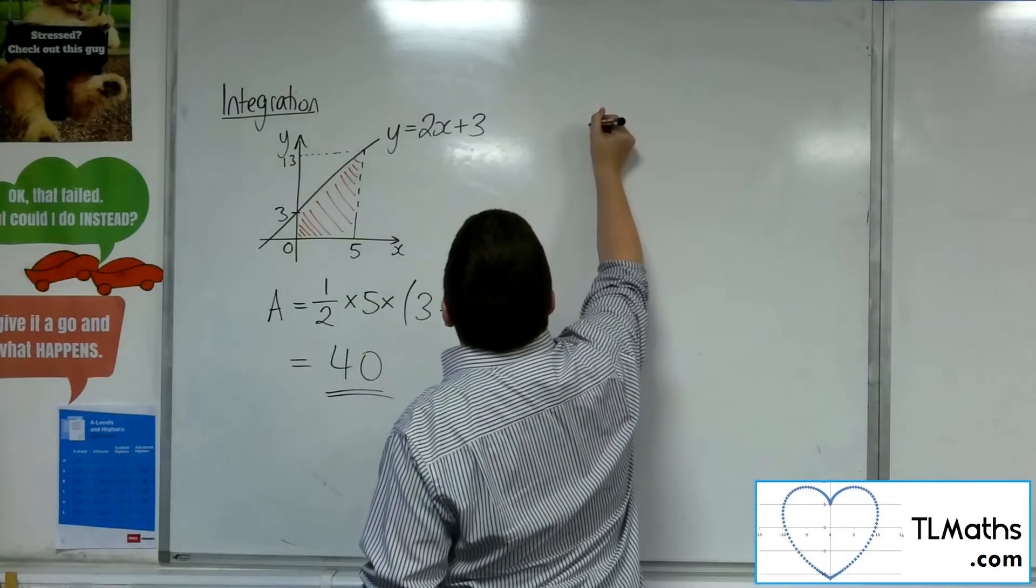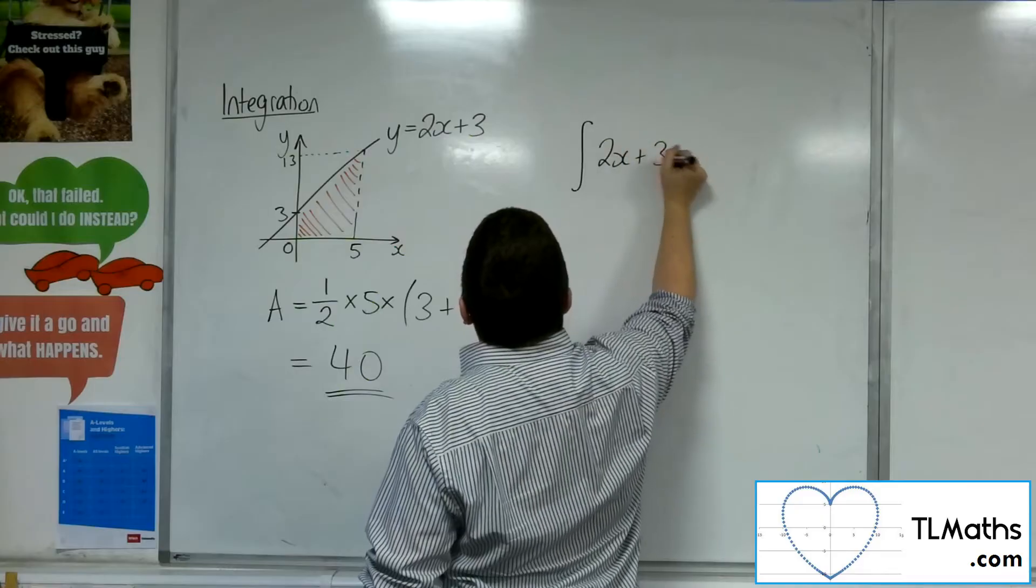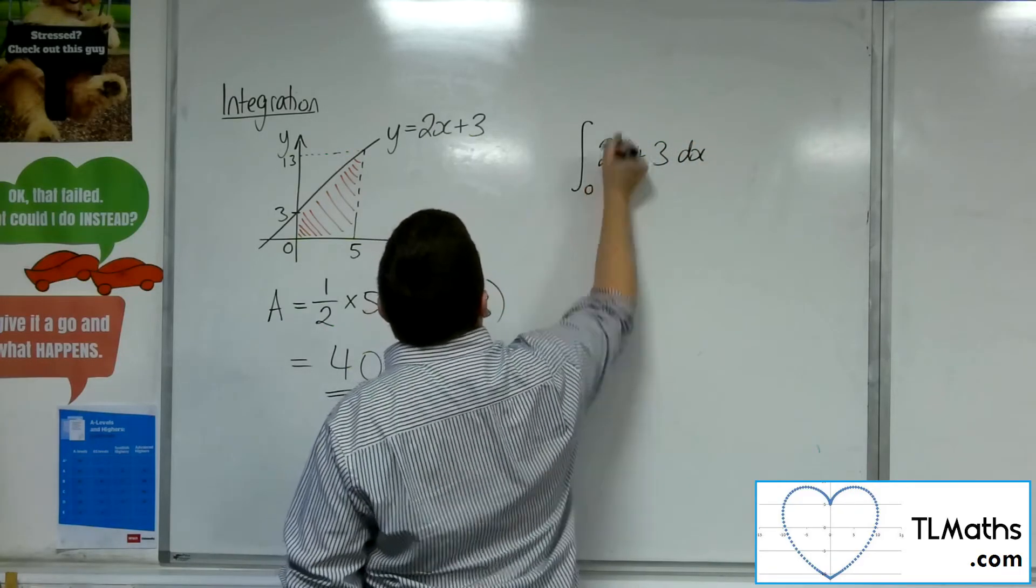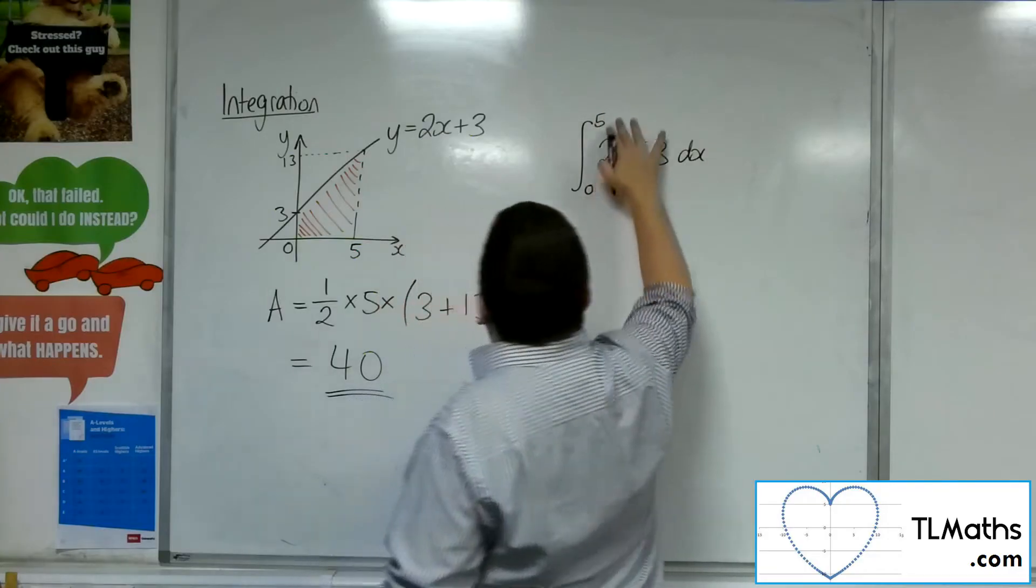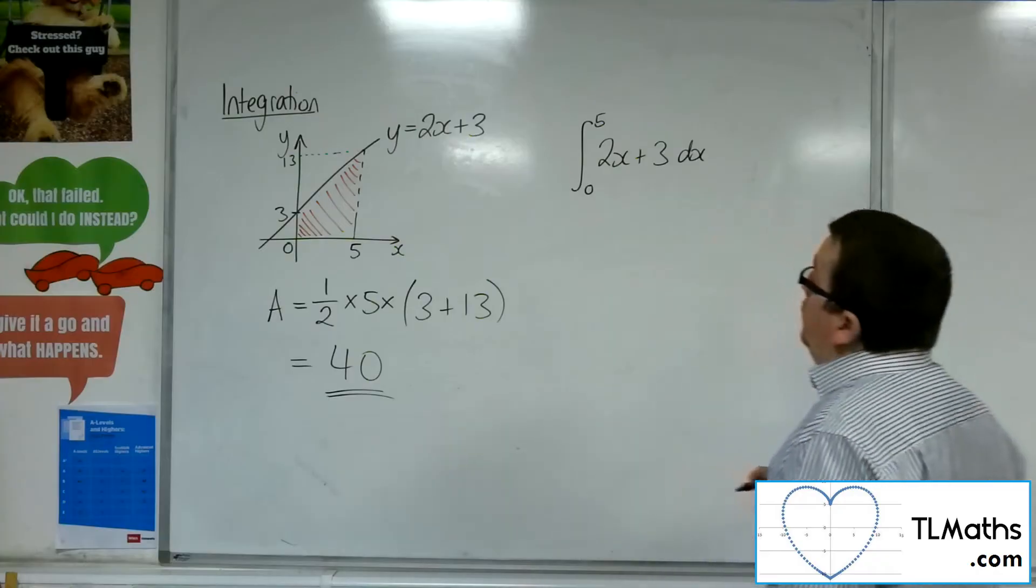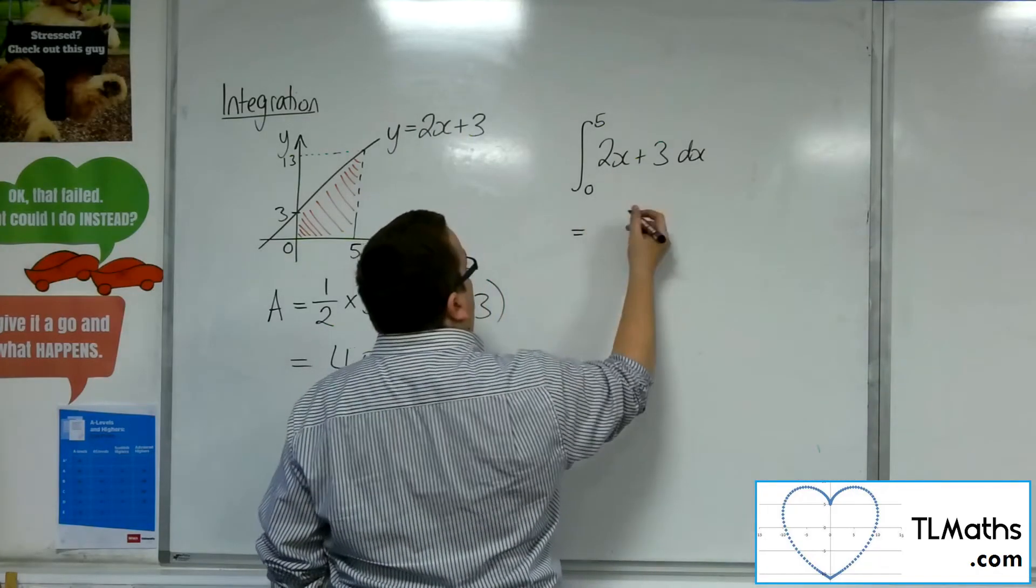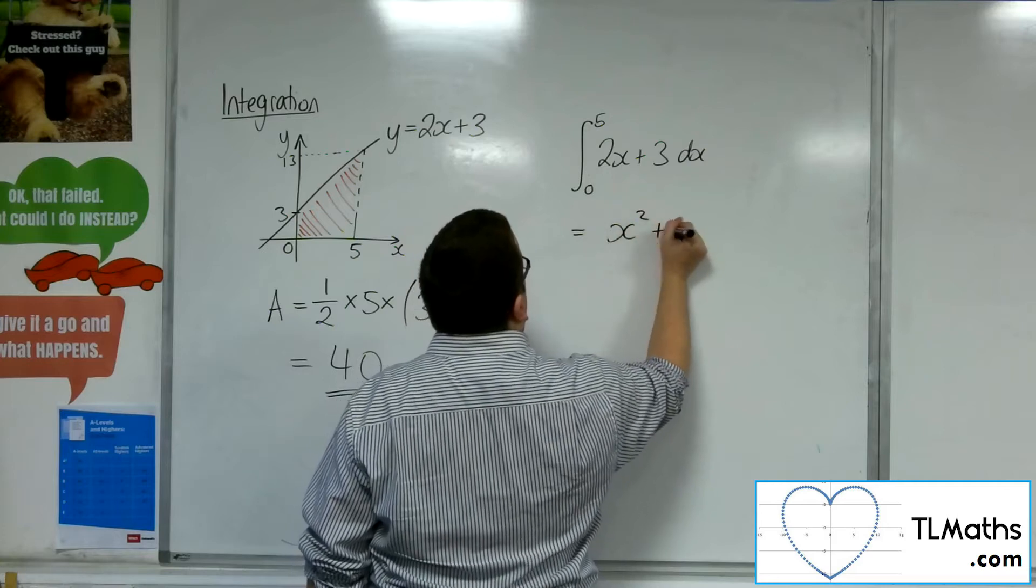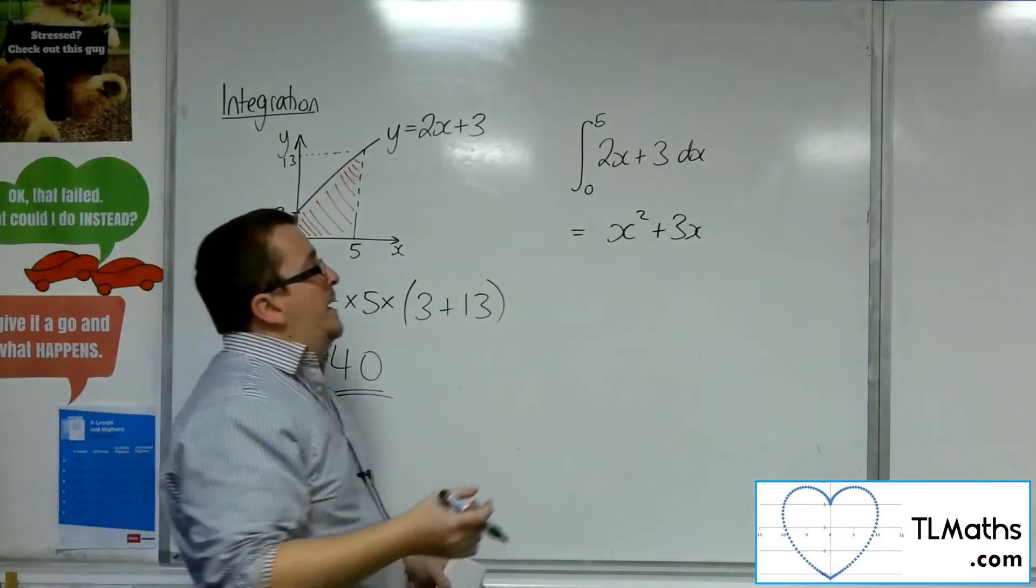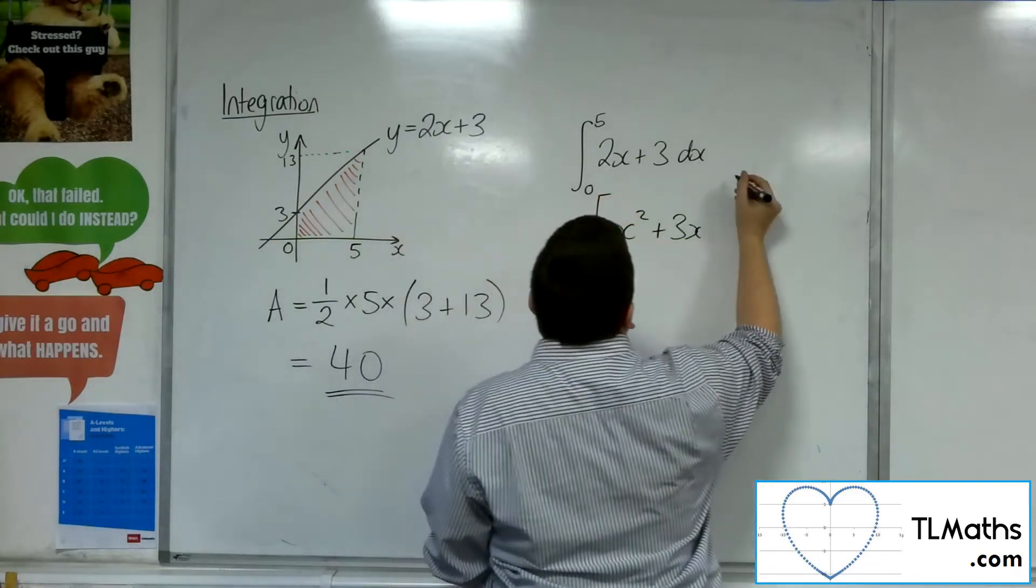So actually, what we can do is we can integrate 2x plus 3 between 0 and 5. So we're now going to have limits on our integral, so that we integrate the 2x plus 3 to x squared plus 3x, add 1 to the power, divide by the new power. And then we're going to evaluate it.